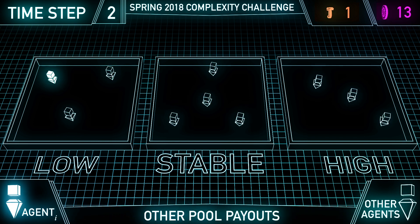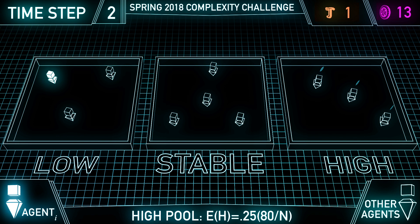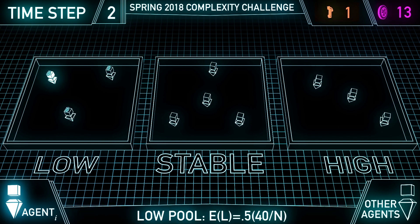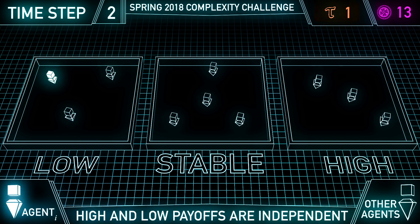The other two pools each pay a random amount that must be split evenly among all of the agents that selected that particular pool at that time step. The high pool pays 80 coins, split evenly among occupants, with a probability of 0.25 and zero coins otherwise. The low pool pays 40 coins, split evenly among occupants, with probability 0.5 and zero coins otherwise. The random payoffs for the high and low pools are independent of one another.